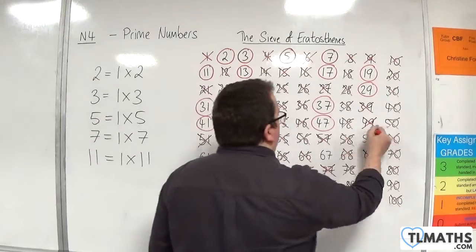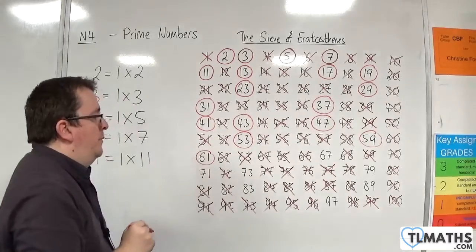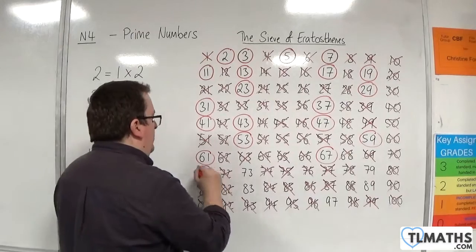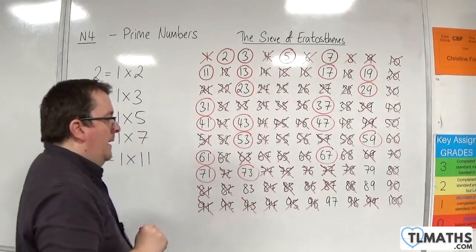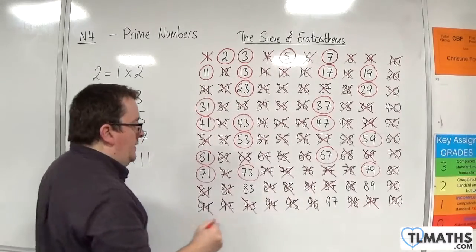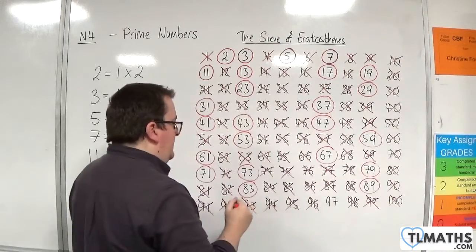So that's fifty-three, fifty-nine, then we've got sixty-one, and then we've got sixty-seven, and then we've got seventy-one, and seventy-three, and seventy-nine, and eighty-three, and eighty-nine, and ninety-seven.